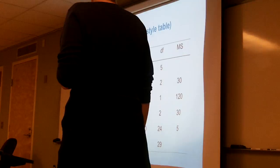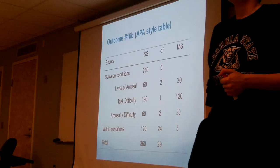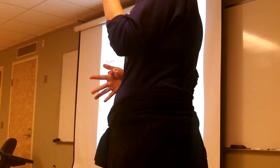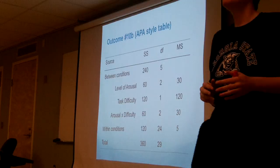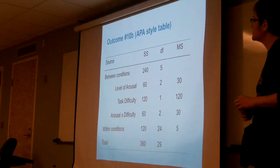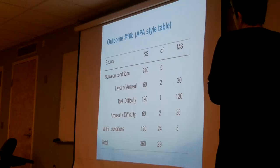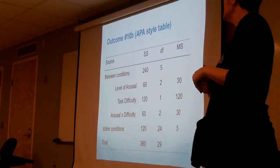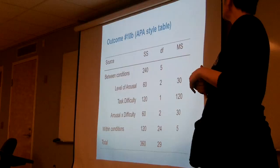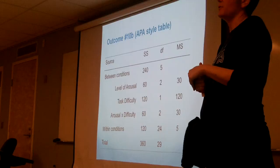Here's an APA source table for the arousal by task difficulty data. The sum of squares for level of arousal is 60. The degrees of freedom for task difficulty is 1. The mean square for the arousal-by-difficulty interaction is 30. Sum of squares total is 360. Degrees of freedom within conditions is 24.